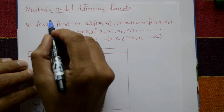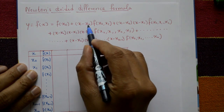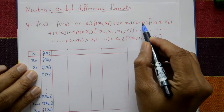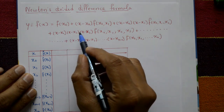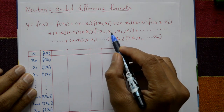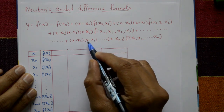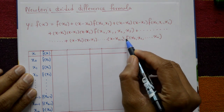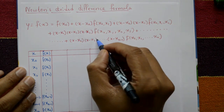Newton's divided difference formula: y = f(x) = f(x₀) + (x - x₀)·f[x₀,x₁] + (x - x₀)(x - x₁)·f[x₀,x₁,x₂] + (x - x₀)(x - x₁)(x - x₂)·f[x₀,x₁,x₂,x₃] + ... + (x - x₀)(x - x₁)···(x - xₙ₋₁)·f[x₀,x₁,...,xₙ]. This is Newton's divided difference formula.